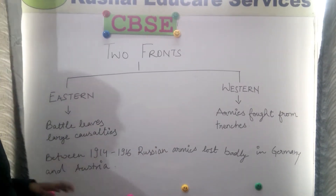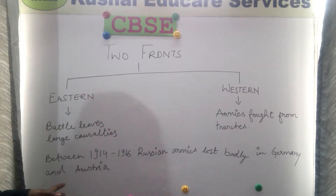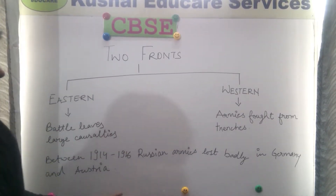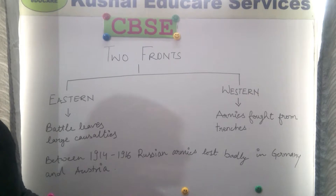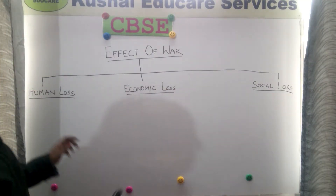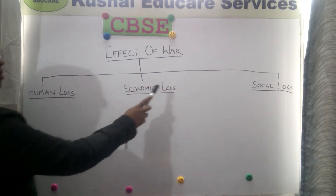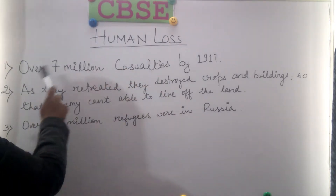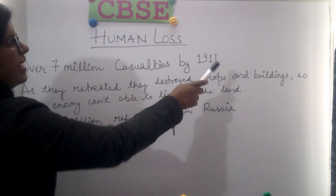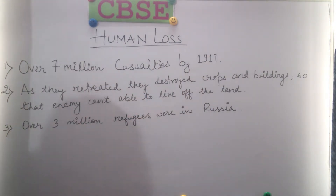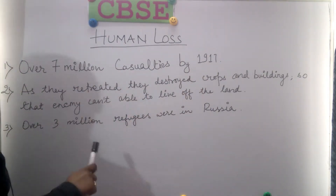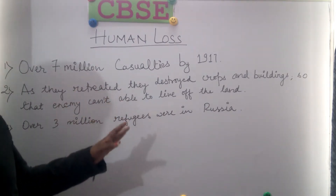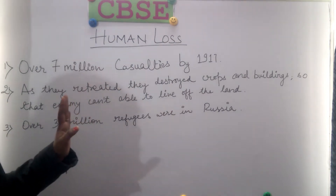The Western front was a safer front where armies fought from the trenches, but the Eastern front saw large casualties. Between 1914 and 1915, the Russian army lost badly against Germany and Austria. The effect of war brought enormous economic and social losses. Over 7 million casualties by 1917. As they retreated, they destroyed crops and buildings so the enemy could not live off the land.